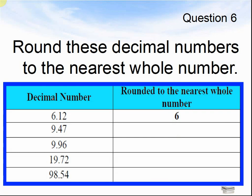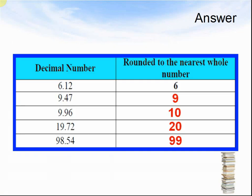Question 6. Round these decimal numbers to the nearest whole number. For example, 6.12 goes to 6. The answers are: 6.12 goes to 6, 9.47 goes to 9, 9.96 goes to 10, 19.72 goes to 20, 98.54 goes to 99.